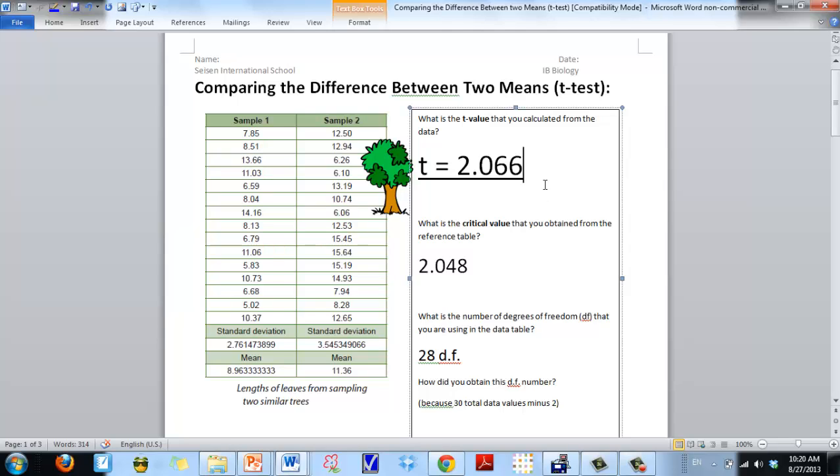So, what in the world does that mean? Well, you're going to try to compare this number to a special number called the critical value. And the critical value that you're going to compare it to really depends on how many total numbers you have here. And you have to refer to this big crazy looking table. For now, just bear with me. The calculator has told me that the t-value for this set of data, this set of data from two samples, is 2.066. And I'm going to tell you that my critical value is 2.048.